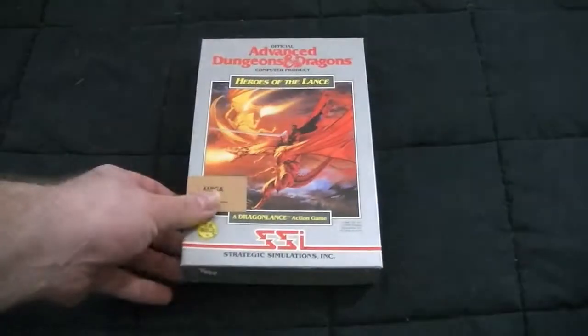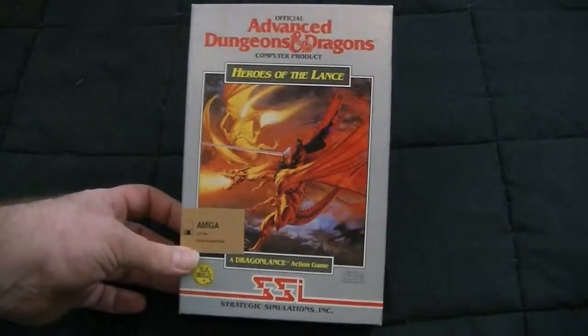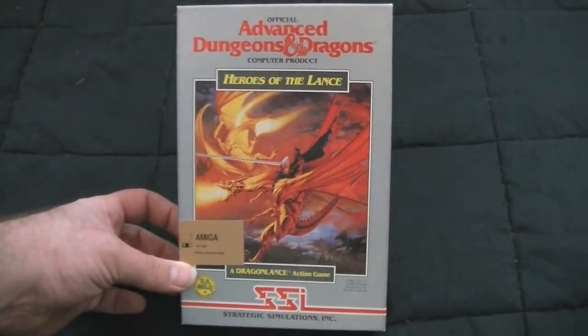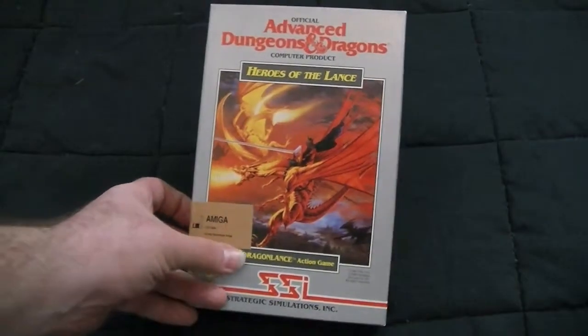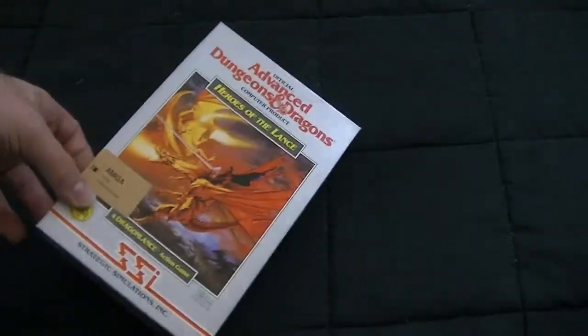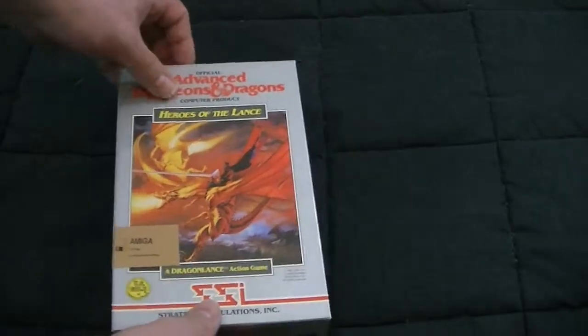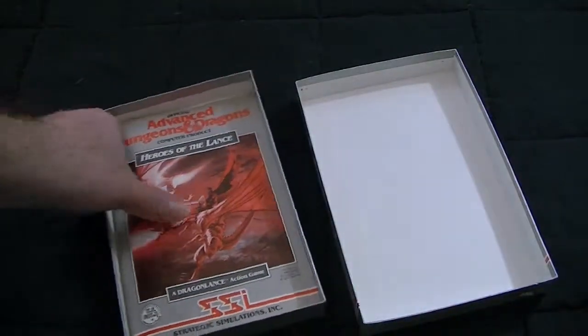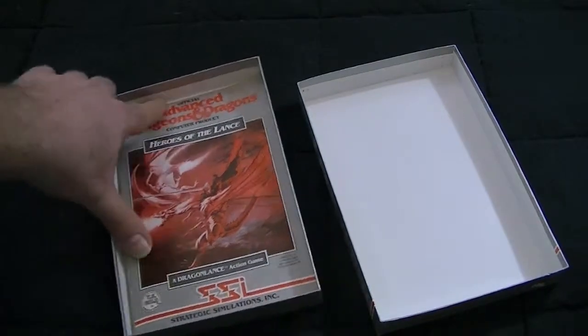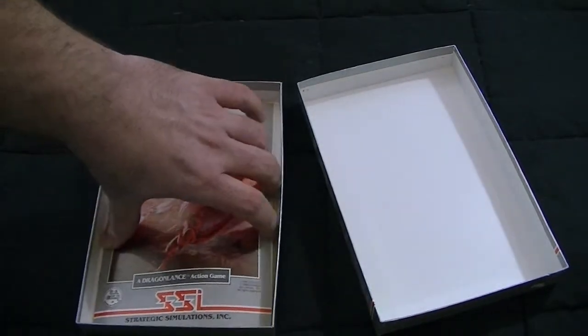And the other gold box that is not a gold box is Advanced Dungeons and Dragons Heroes of the Lance, which is a Dragonlance action game. Dragonlance was an offshoot. It was basically a fantasy Wild West. Good guys wore white, bad guys wore black, neutral guys wore red.